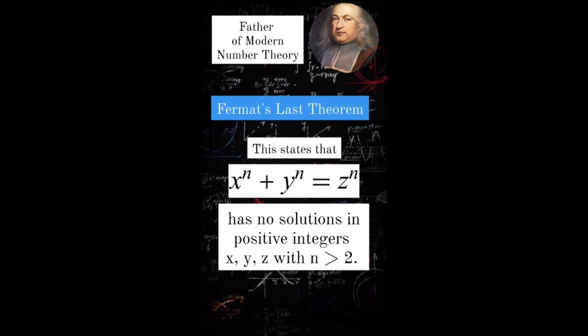3. Fermat's last theorem. This states that x raised to n plus y raised to n equals z raised to n has no solutions in positive integers x, y, z with n greater than 2.